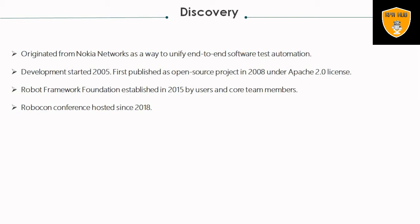Most of the libraries and tools in the ecosystem are also open source. The framework was initially developed at Nokia Networks and open-sourced in 2008. Development started at the beginning of 2005 but was first published as an open source project in 2008 under the Apache 2.0 license. The Robot Framework Foundation was established in 2015 by users and core team members. The RoboCon conference has been hosted since 2018.